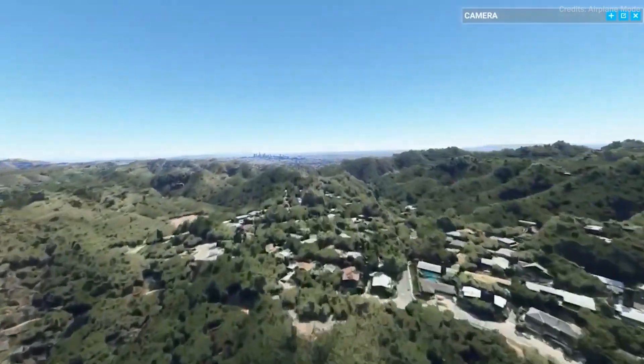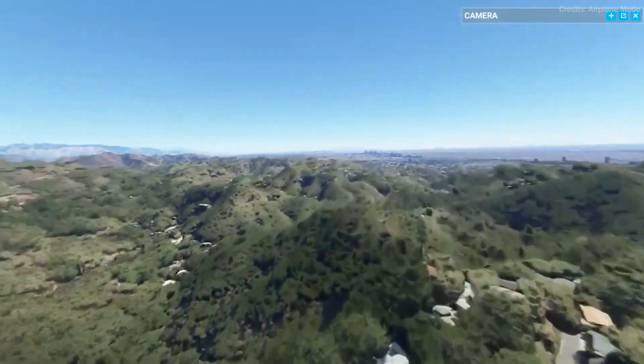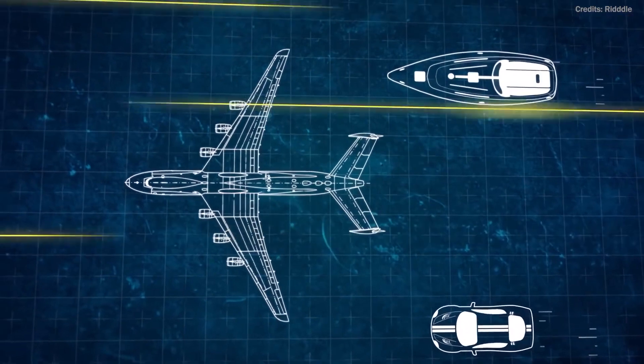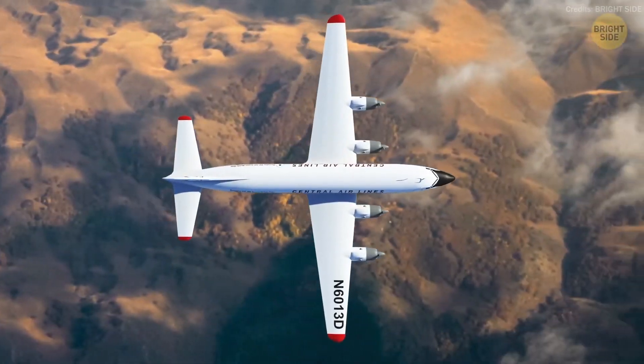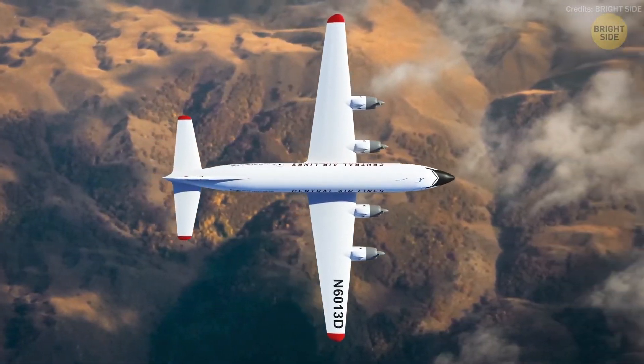Now imagine traveling at even one percent of that. Well, while one percent of anything may not seem like much, with light that's a lot of speed—over one million kilometers per hour. That's still over 10,000 times faster than a commercial airliner.